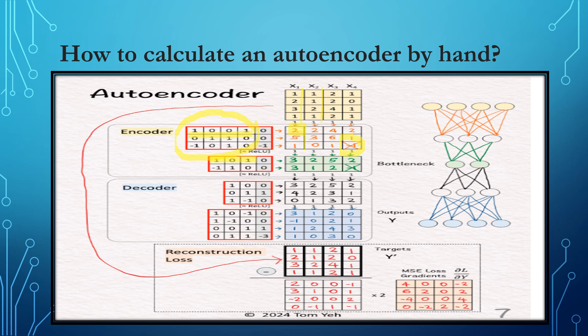Now that we have the output, we calculate the reconstruction loss for backpropagation. We compute the gradient of the mean squared error loss between the output Y and the target Y', using the formula 2(Y - Y'). First we calculate Y minus Y' — for example, 3 minus 1 equals 2, and 1 minus 1 equals 0 — then multiply the resulting matrix by 2. This gradient kicks off the backpropagation process.